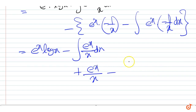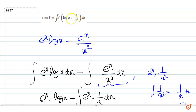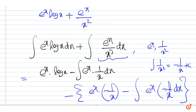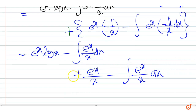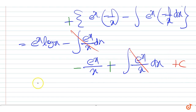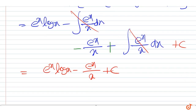There is a correction here — this must be plus. So the integral will be plus here, and this will be plus, and this will be plus. Therefore this will be minus and this will be plus, then this integral and this integral will get cancelled. Therefore the given integral is equal to e to the power x log x minus e to the power x upon x, plus C. That is our final expression.